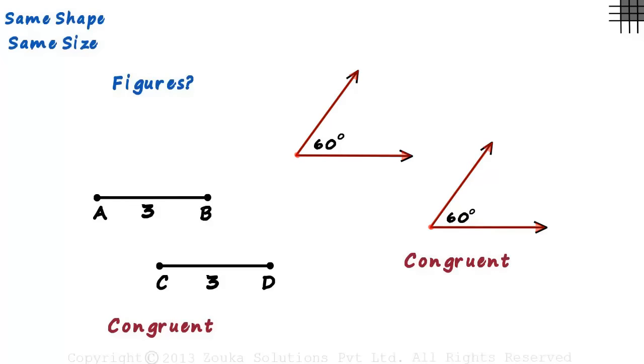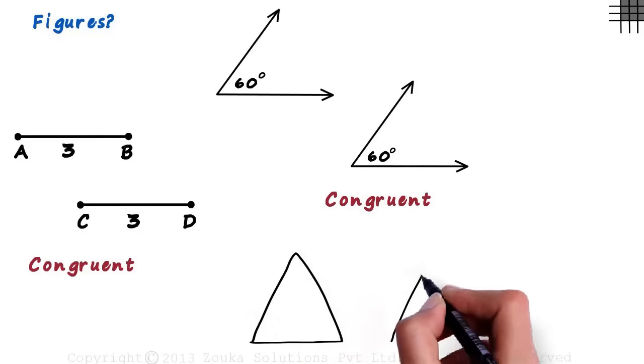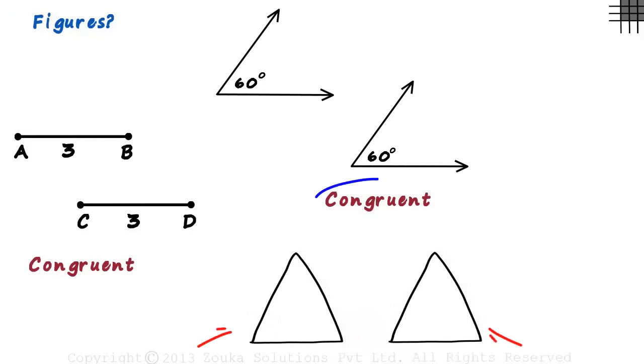Coming back to our question. When are two figures congruent? Look at these two triangles. When can we say that they are congruent?